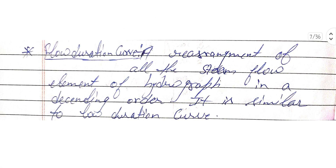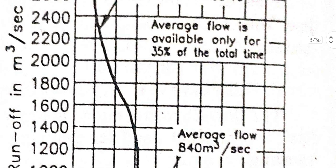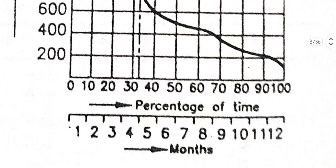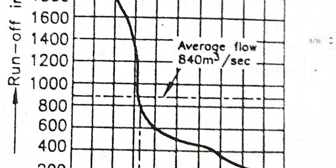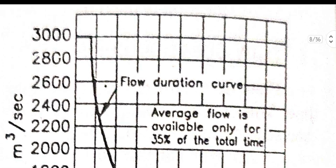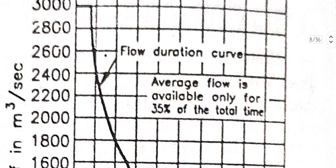Next is the flow duration curve. A flow duration curve is a rearrangement of all the stream flow elements of a hydrograph in descending order — it is similar to the load duration curve, which is a rearrangement of the chronological load curve in descending order. In the graph for flow duration curve, the x-axis shows percentage of time (or months) and the y-axis shows runoff in cubic meters per second. The dotted line at the middle represents the average flow.